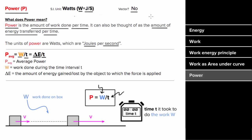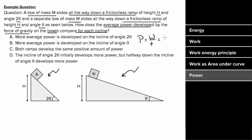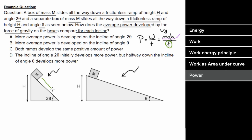For a power example: a box of mass m slides all the way down a frictionless ramp of height h and angle two-theta, and a separate mass m slides all the way down a frictionless ramp of height h and angle theta. How does the average power developed by the force of gravity compare for each incline? Power equals work done per time. The work done on both boxes equals the change in kinetic energy, which equals the change in potential energy — mgh. Since the mass, g, and height are the same for both, the work done is equal. However, the time it takes to slide down is not equal — the mass on the steeper ramp reaches the bottom faster, so it has a higher rate of power. Even though the same amount of work is done, the rate at which that work is done is greater for the steeper ramp.